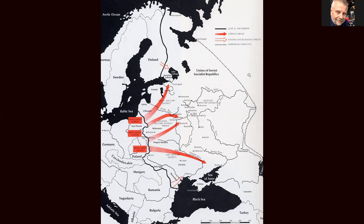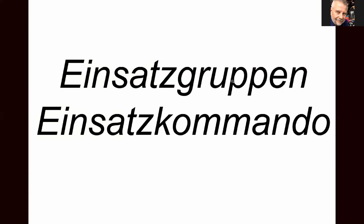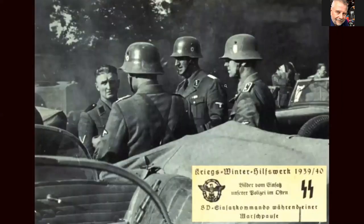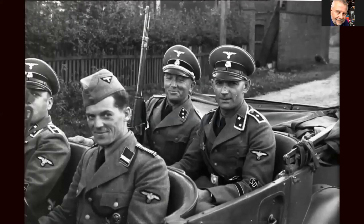As the German army begins to push into Russia on June 22nd, following closely behind it, arrangements have been made for the mobile killing units — the Einsatzgruppen. These are battalion-sized killing units divided into smaller platoons of killers known as the Einsatzkommandos, tasked with following behind the German army to, officially, 'pacify the population.'